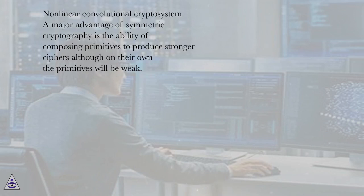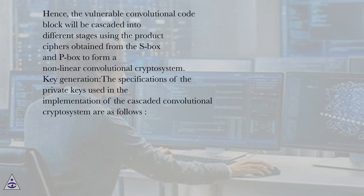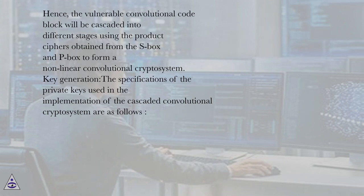Non-linear convolutional cryptosystem. A major advantage of symmetric cryptography is the ability of composing primitives to produce stronger ciphers, although on their own the primitives will be weak. Hence, the vulnerable convolutional code block will be cascaded into different stages using the product ciphers obtained from the S-box and P-box to form a non-linear convolutional cryptosystem.